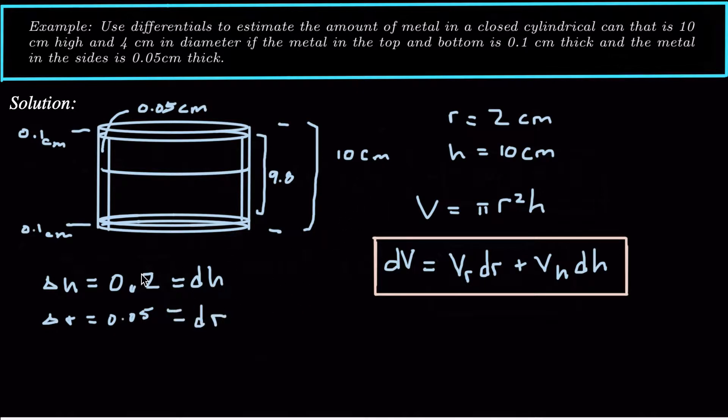Alright, so now we've got pretty much everything we need. We need to calculate V sub r. And V sub r is going to be the partial derivative with respect to r, which is 2 pi r h. And the partial derivative with respect to h is going to just be pi r squared.